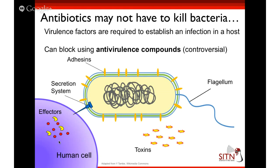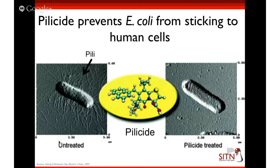One example of a small molecule that works this way is pillicide. On E. coli, you can see those filamentous structures on the outer surface of the cylindrical bacterium — those are called pili, and they're used to bind to human cells. If you treat with the small molecule pillicide, it gets rid of the pili, and now E. coli can no longer adhere to human cells. So it looks like a promising approach.